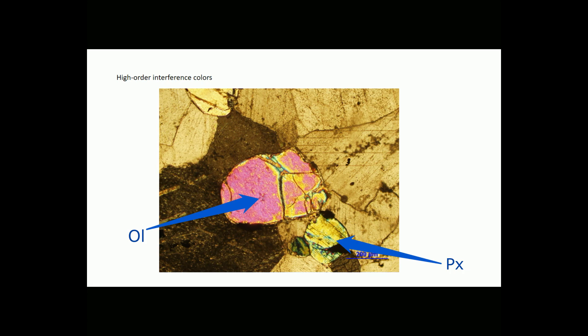Below and to the right of the olivine, there is a grain of pyroxene. This grain shows cleavage, which is one way we can sometimes tell olivine from pyroxene in thin section.